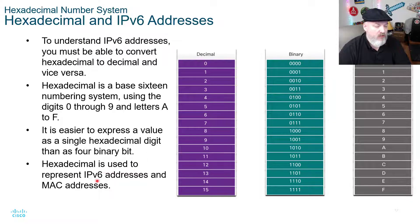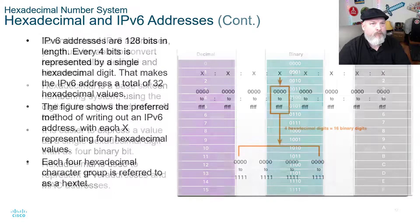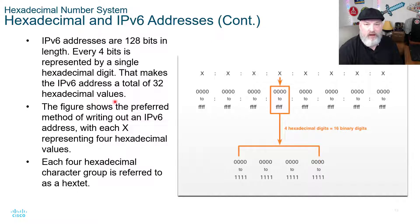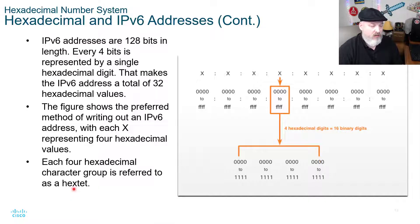Hexadecimal is used to represent IPv6 addresses and MAC addresses. IPv6 addresses are 128 bits in length. Every four bits is represented by a single hexadecimal digit, making the IPv6 address a total of 32 hexadecimal values. The figure on the right shows the preferred method of writing out an IPv6 address with each group representing four hexadecimal values. Each hexadecimal character group is referred to as a hextet — you need to know that word. A hextet is a four hexadecimal character group, like FFFF.